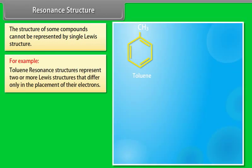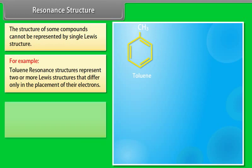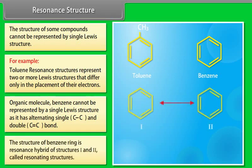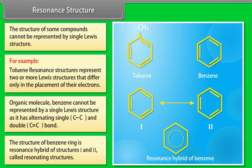Resonance structures: the structure of some compounds cannot be represented by a single Lewis structure, for example toluene. Resonance structures represent two or more Lewis structures that differ only in the placement of their electrons. The organic molecule benzene cannot be represented by a single Lewis structure as it has alternating single and double bonds. The structure of the benzene ring is a resonance hybrid of two resonating structures.